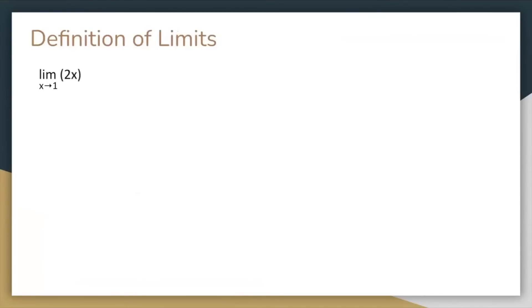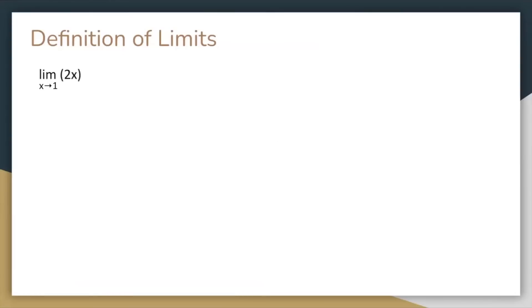Let's start off with a simple limit. The limit as x approaches one of 2x, which means as x approaches one, what does 2x approach? Well, from this table of values, we can see that f of x gets closer and closer to two. And using direct substitution, we can solve that the limit indeed does equal two.